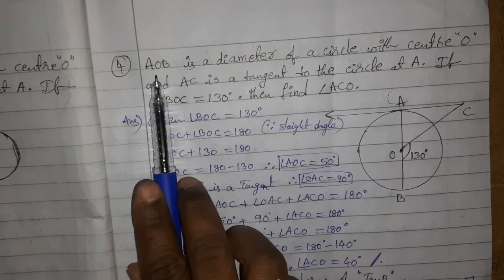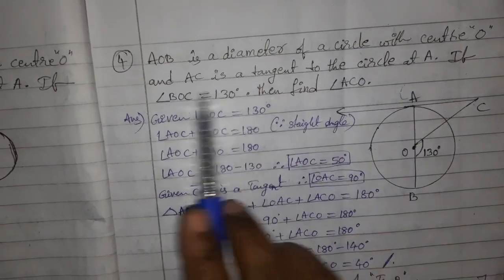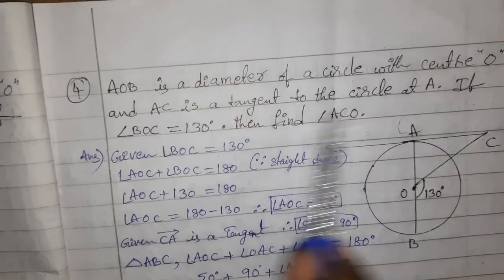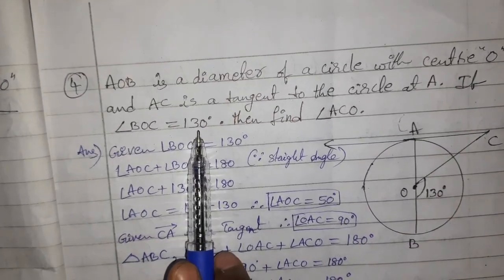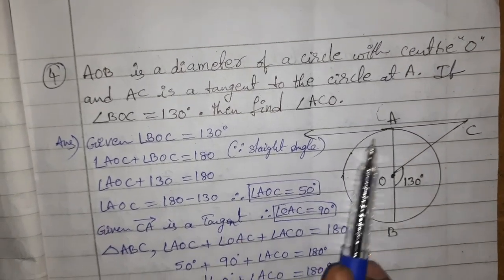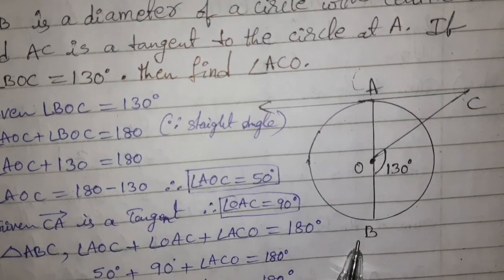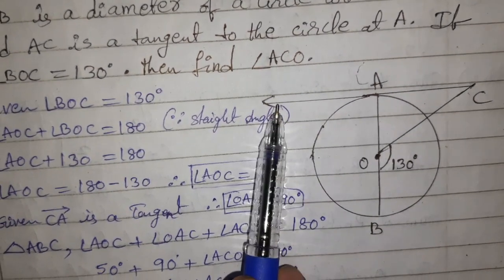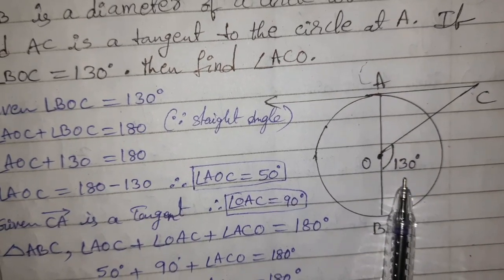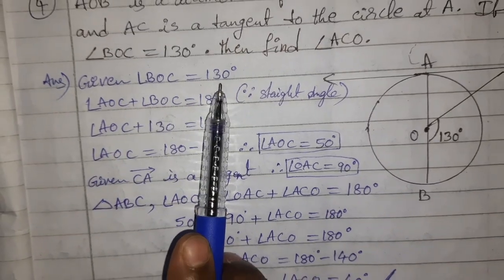Fourth question: AOB is a diameter of a circle with center O. CA is a tangent to the circle at A. If angle BOC is 130 degrees, find angle ACO. In the figure, the circle has diameter AB, CA is a tangent, and angle BOC = 130 degrees.